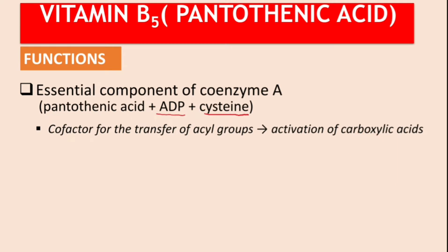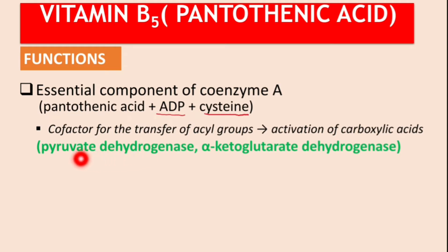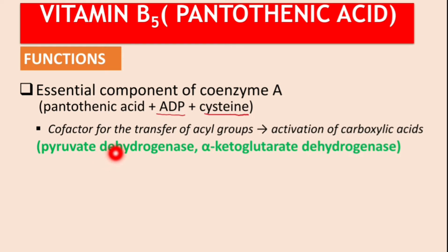There are two enzymes to remember. The first is pyruvate dehydrogenase, found in the transition stage right after glycolysis. At the end of glycolysis you end up with pyruvate, and in an aerobic state this enzyme acts in the mitochondria, converting pyruvate to acetyl-CoA.